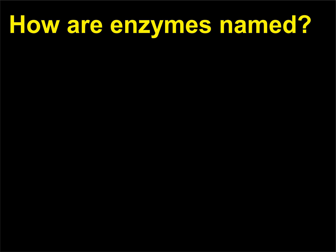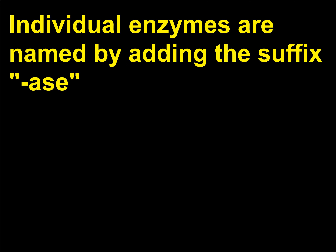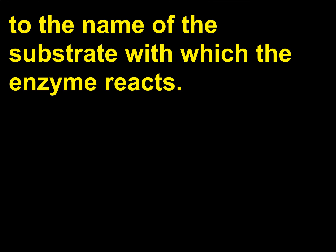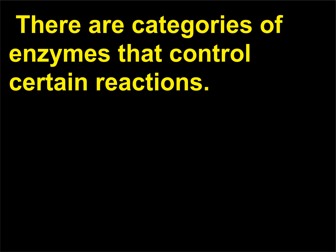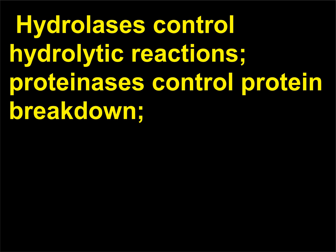How are enzymes named? Individual enzymes are named by adding the suffix -ase to the name of the substrate with which the enzyme reacts. An example of this method is the enzyme amylase, which controls the breakdown of amylose (starch). There are categories of enzymes that control certain reactions; hydrolases control hydrolytic reactions.